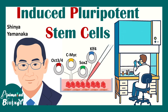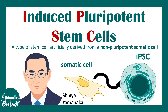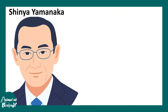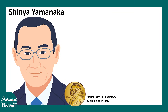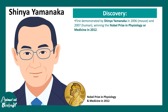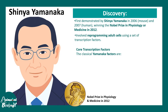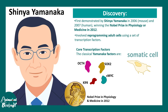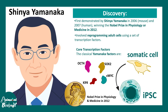In this video, we'll talk about induced pluripotent stem cells. An induced pluripotent stem cell is a type of stem cell which is artificially derived from a non-pluripotent somatic cell. This was discovered by Shinya Yamanaka and his colleagues. Yamanaka received the Nobel Prize in Medicine and Physiology in 2012 for the discovery of factors that can convert any cell type into a stem cell. These factors, known as Yamanaka factors, are a set of transcription factors capable of transforming somatic cells into iPSCs.